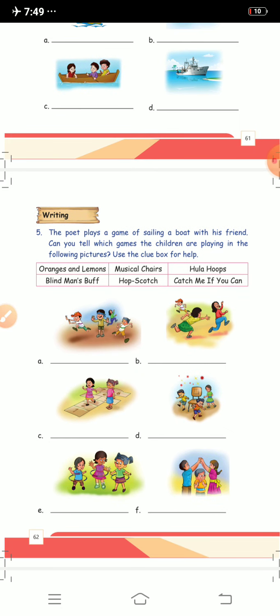The question is: the poet plays a game of sailing a boat with his friend. Now, can you tell which games the children are playing in the following pictures? You can use the clue box for help.